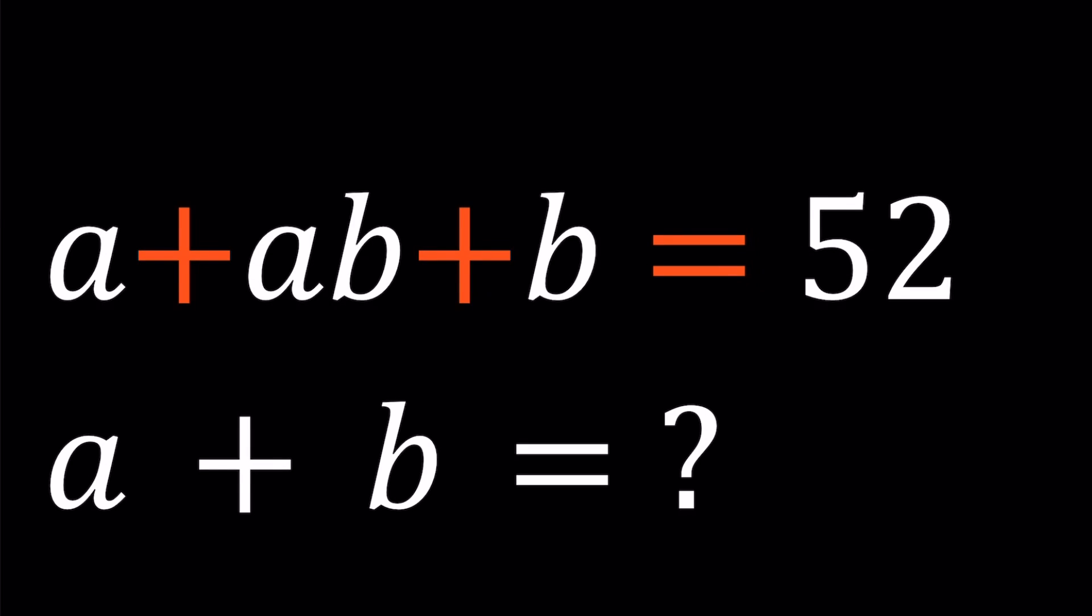Hello everyone. In this video we're going to be solving a nice Diophantine equation. In other words, an equation with integer solutions. So we have a plus ab plus b equals 52, and a and b are integers, and we're going to evaluate a plus b.